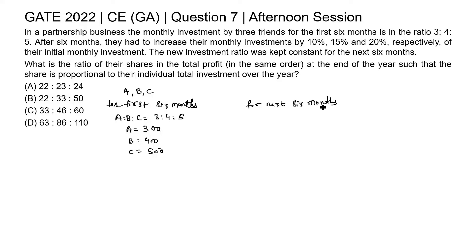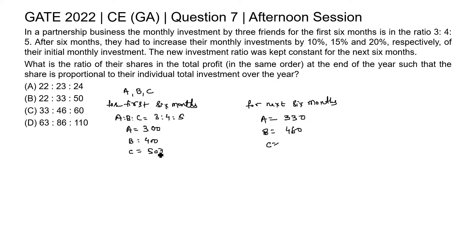For the next six months, each person increased their monthly investment by 10%, 15%, and 20% respectively. For A, 10% of 300 is 30, so 300 + 30 = 330. For B, 15% of 400 is 60, so 400 + 60 = 460. For C, 20% of 500 is 100, so 500 + 100 = 600. So 300, 400, 500 are for the first six months, and 330, 460, 600 are for the next six months.